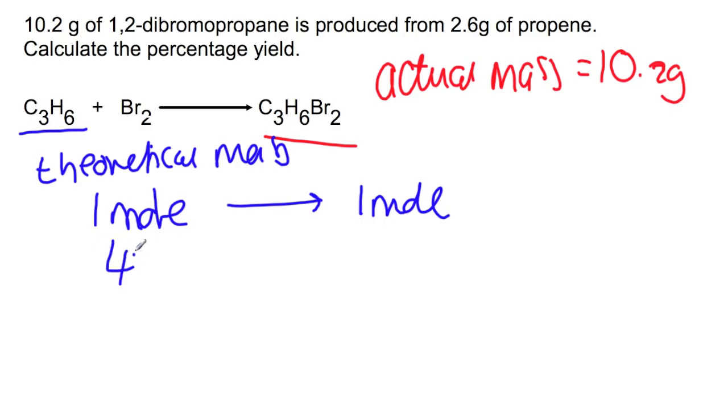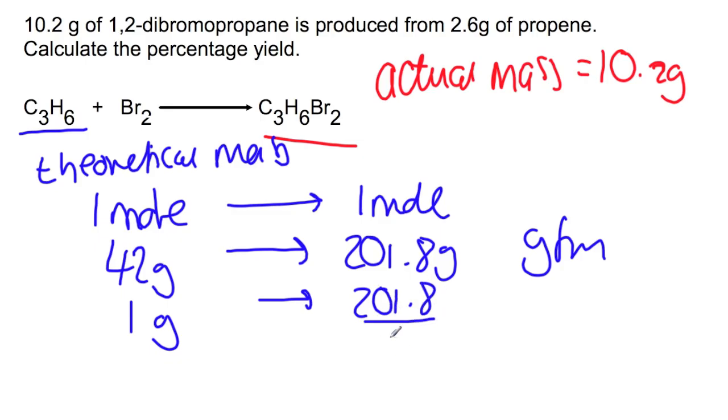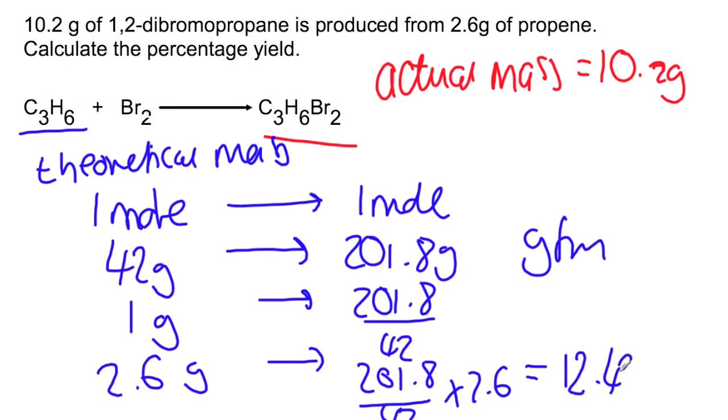That means that 42 grams, the gram formula mass of propene, should produce 201.8 grams of 1,2-dibromopropane. That is the gram formula mass for each of those. Taking this down to 1 gram, we would have 201.8 divided by 42. And then taking it back to the 2.6 grams that was used, we would have 201.8 divided by 42 multiplied by 2.6. That gives you a theoretical mass of 12.49 grams.